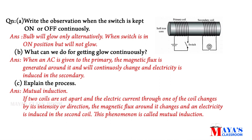When an AC is given to the primary coil, the magnetic flux generated around it will continuously change, and electricity is induced in the secondary coil. This process is called mutual induction. If two coils are set apart and the electric current through one coil changes in intensity or direction, the magnetic flux around it changes and electricity is induced in the second coil. This phenomenon is called mutual induction.